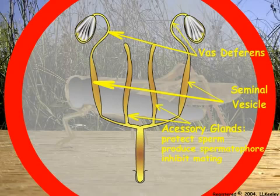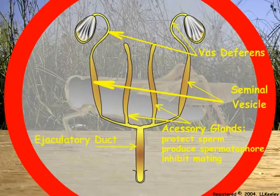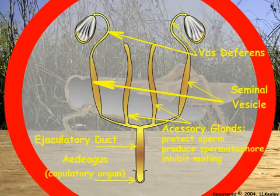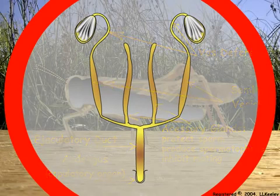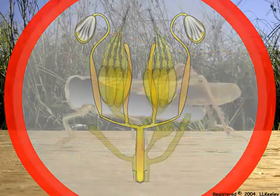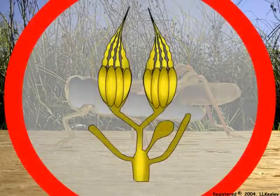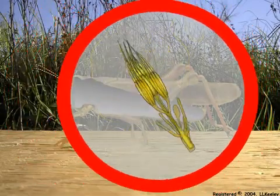Finally, the sperm or spermatophore are passed through the ejaculatory duct during copulation.